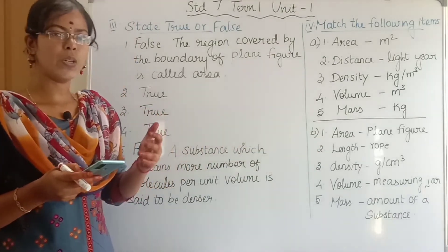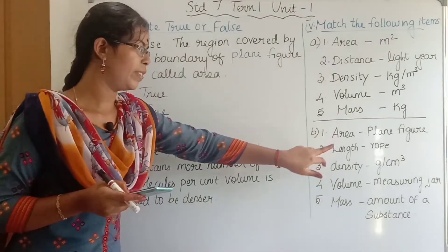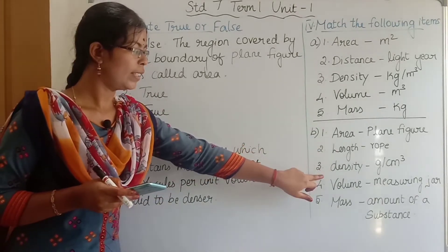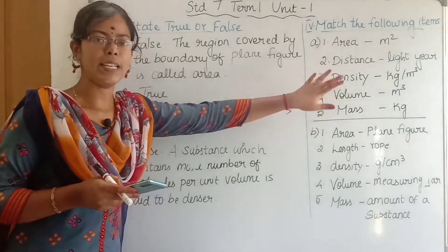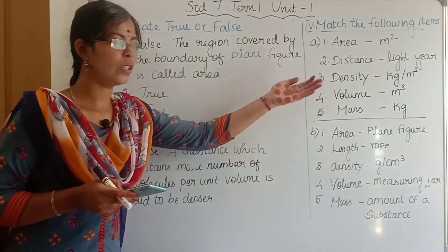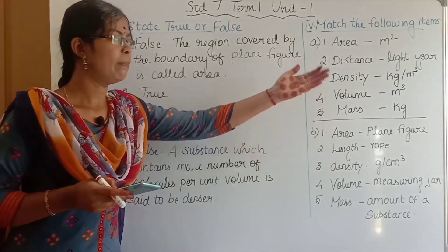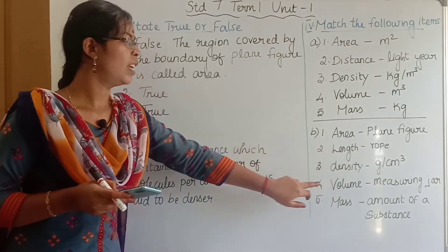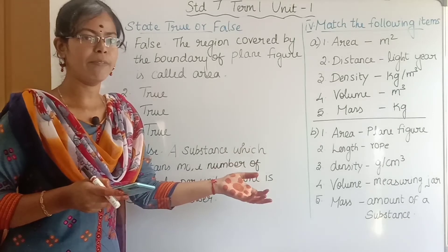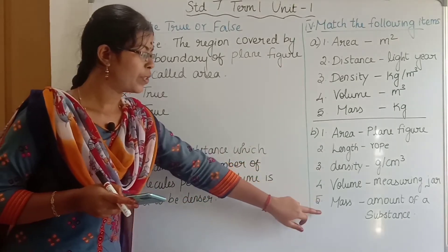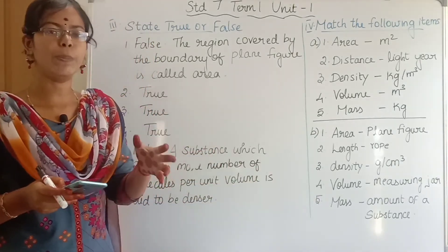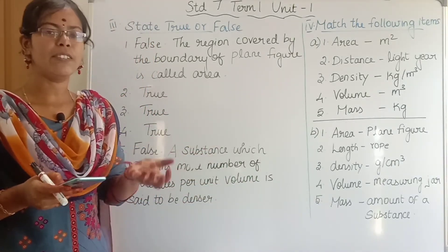Part B: Area is matched with plane figure. Length is matched with rope. Density: SI unit is kilogram per metre cube; CGS unit is gram per centimetre cube. Volume: we use a measuring jar to find liquid volume. Mass: it is the amount of substance present.